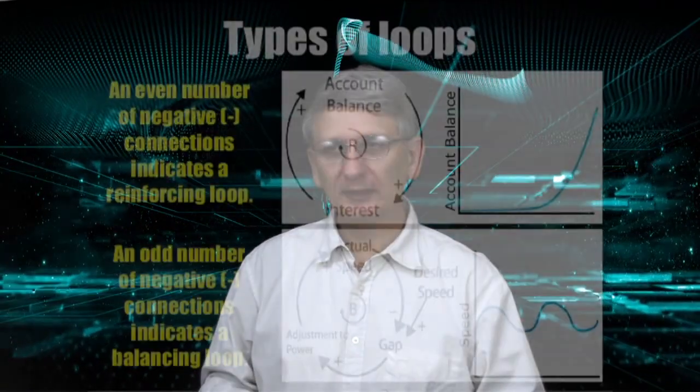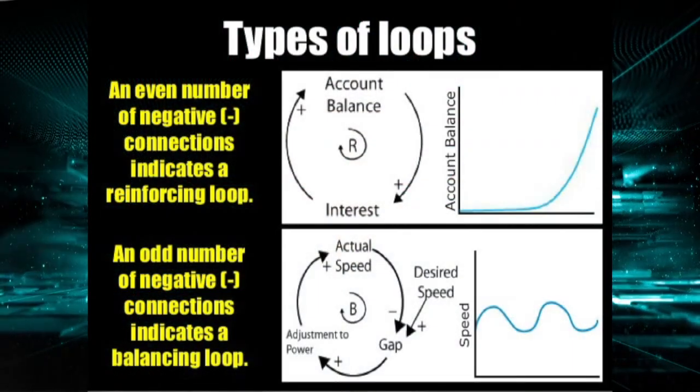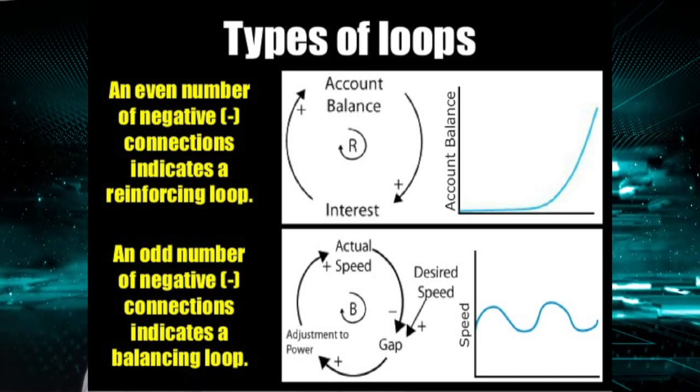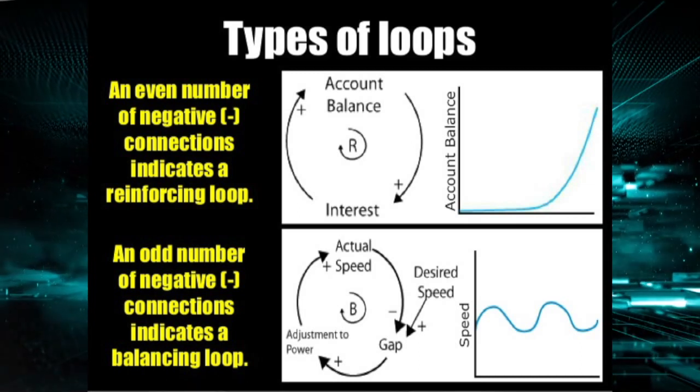An easy way to tell if a loop is reinforcing or balancing is counting the number of negative connections. If it is an odd number, there will generally be a balancing loop.